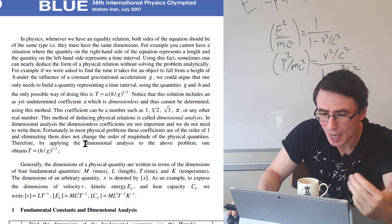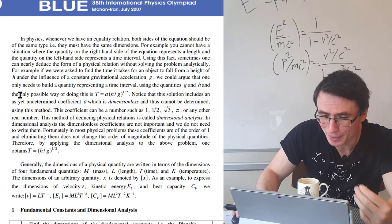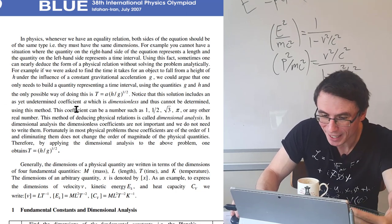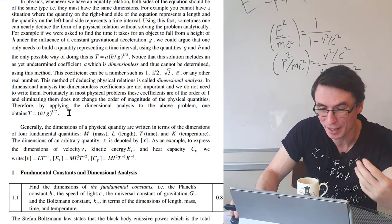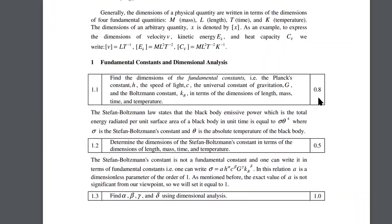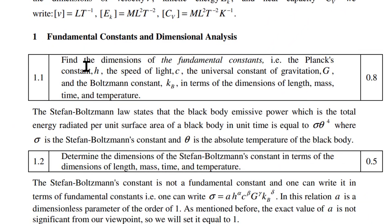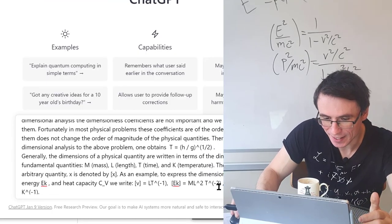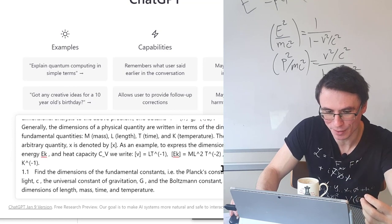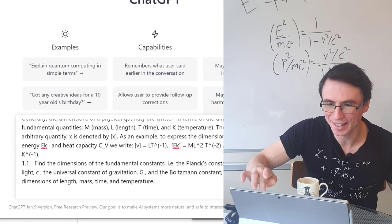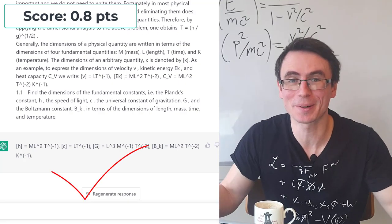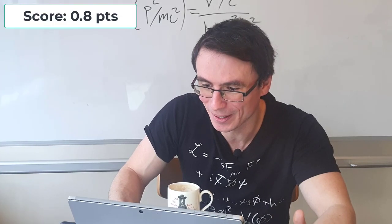This problem actually starts by explaining what dimensional analysis is and giving some examples which I think might actually show the AI exactly what to do. For 0.8 points is to find the dimensions of the fundamental constants. I'm going to paste the entire paragraph in with all the information and let it calculate. Look at that, it's got them correct. That did not take a very long time.